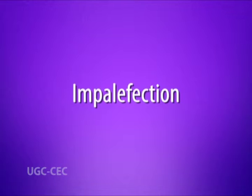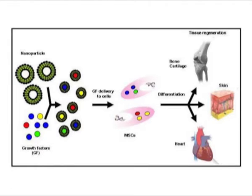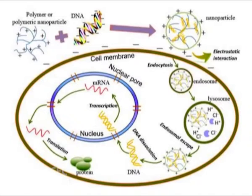Second is impalement, which is carried out by impelling cells using elongated nanostructures and arrays of such nanostructures, such as carbon nanofibers or silicon nanowires, which have been functionalized with plasmid DNA.